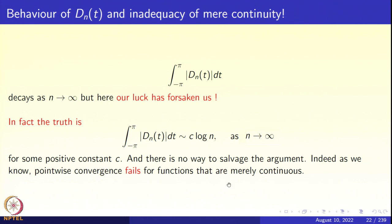This naive argument fails entirely. We know that pointwise convergence must fail when the function is merely continuous — just continuity is not enough; we need a little more. In the next capsule, we shall see that with Hölder continuity of positive exponent α, we can salvage the argument. Thank you very much.